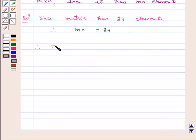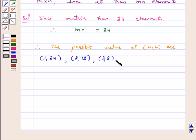Therefore, the possible values of (m,n) are (1,24), (2,12), (3,8), (4,6), (6,4), (8,3), (12,2), and (24,1).